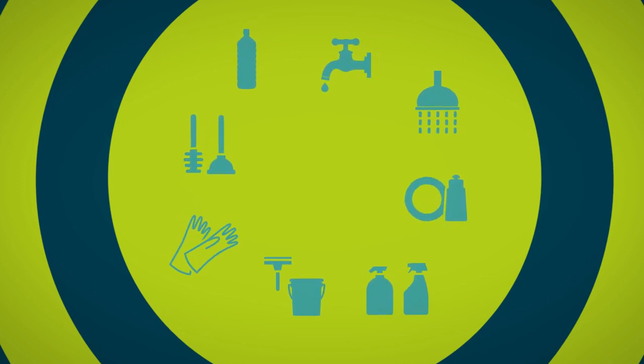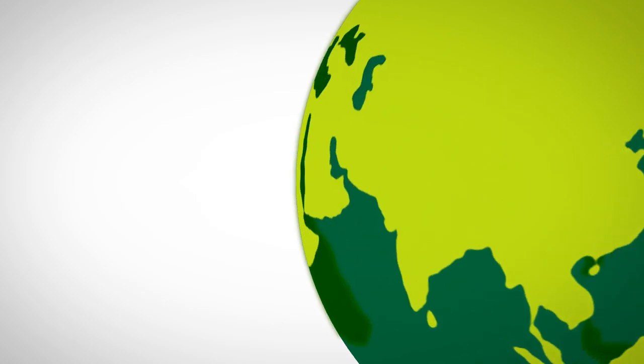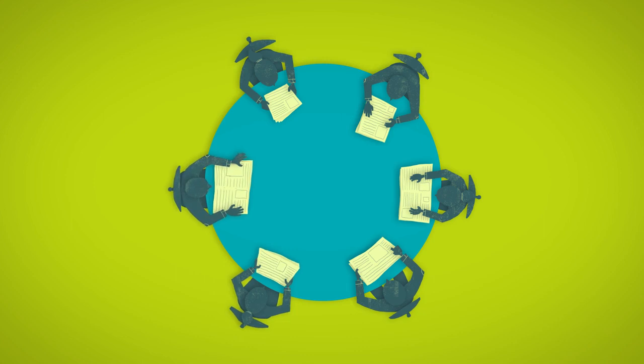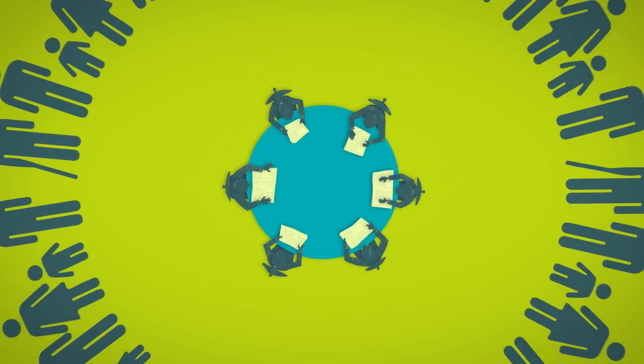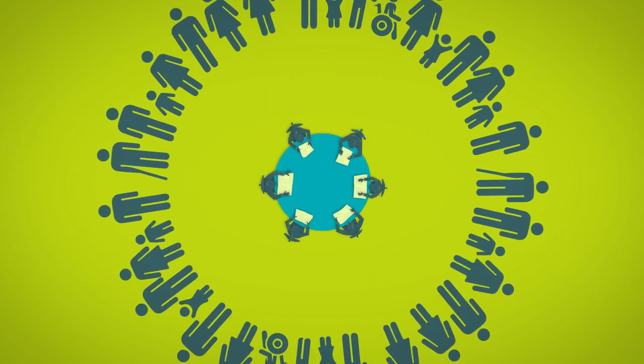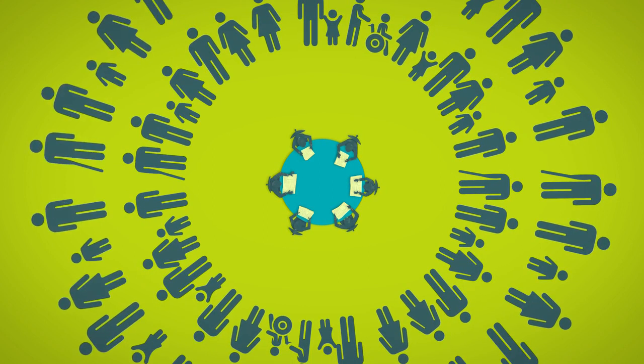At country level, national leaders gather key players around the same table to agree on priorities and actions. As a result of this cooperation, our partners publicly commit to making real progress together, becoming accountable to their communities and to each other.